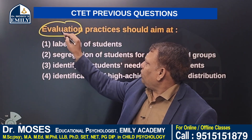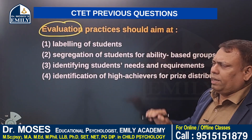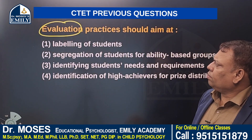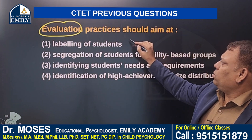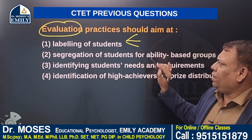Option number one: labeling of students — for example, slow learners, gifted, average.